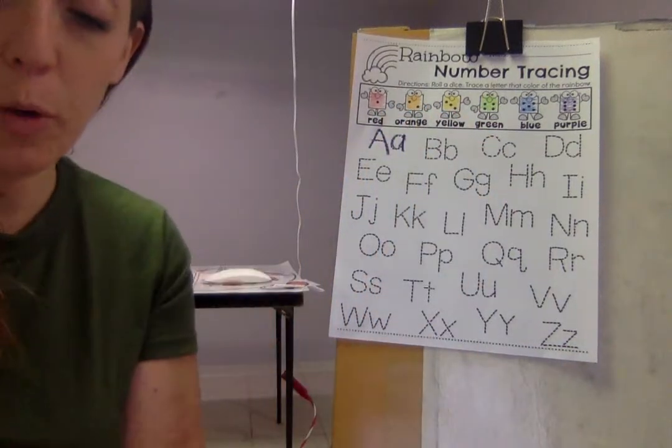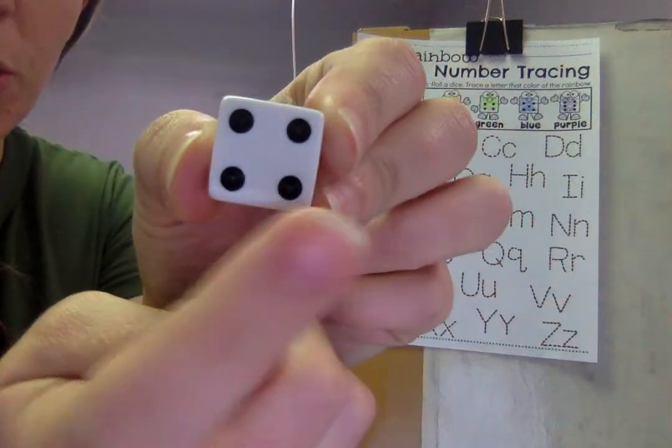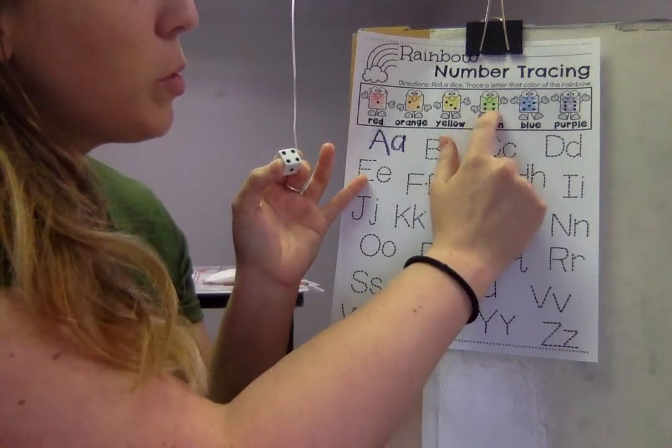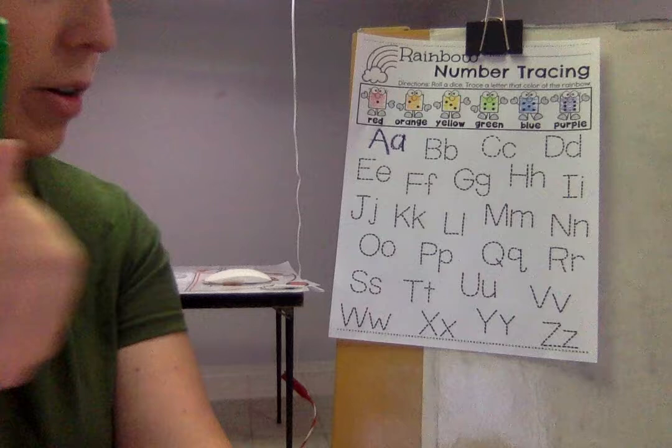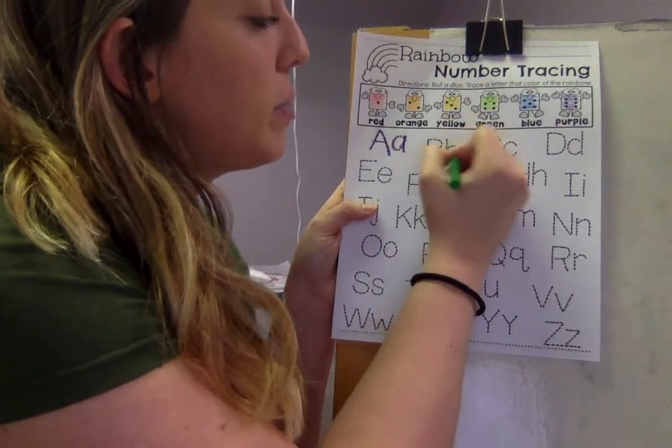All right then I'm going to roll again. Oh this time I rolled one, two, three, four. So I'm gonna go try to find my four again. One, two, three, four was green. So I'm gonna get my green crayon and I'm gonna do my capital letter B and my lowercase b.